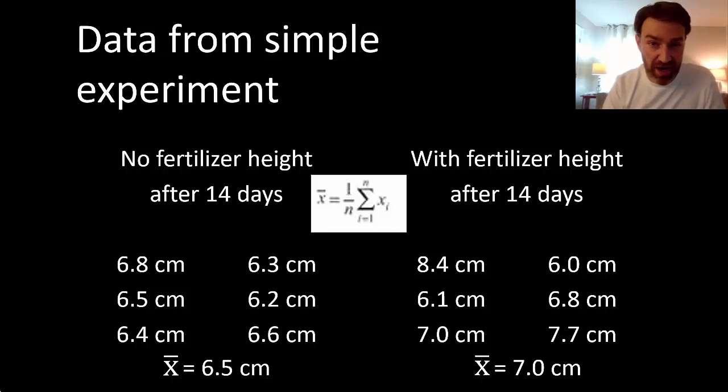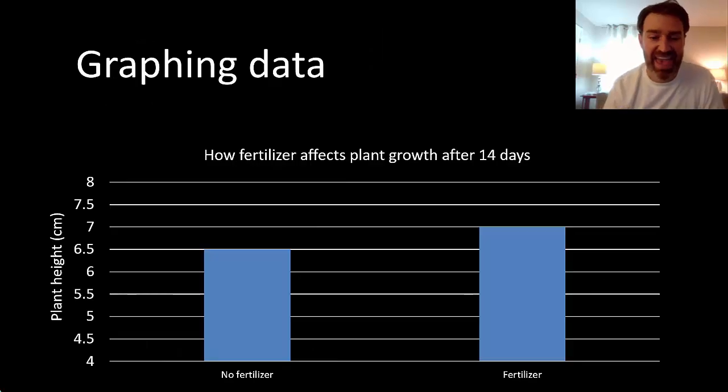So then you could go on to graph. Hopefully you know to make a bar graph in this case because you have categories here for your x-axis. Maybe you'd make an even scale and you'd plot and it looks pretty clear that the fertilizer group is a little taller than the no fertilizer group. But we run into a problem here.